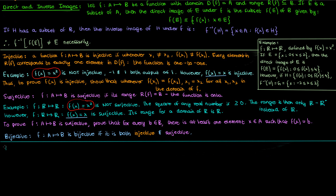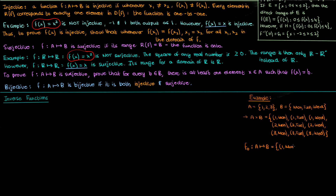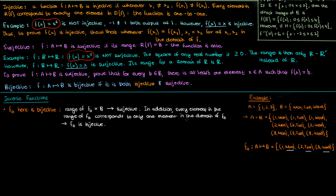Finally, I'll talk about inverse functions and composite functions, starting with inverse functions. Take our two example sets a and b with their Cartesian product. A function f₀ from a to b is a valid subset of a cross b where every element from a is mapped to a unique element in b. Consider a specific f₀ that is bijective — both injective and surjective. Its range is {Monday, Tuesday, Wednesday}, which equals all of b, making it surjective. It's also injective because Monday corresponds only to 1, Tuesday only to 2, and Wednesday only to 3. Since it's both injective and surjective, f₀ is bijective.